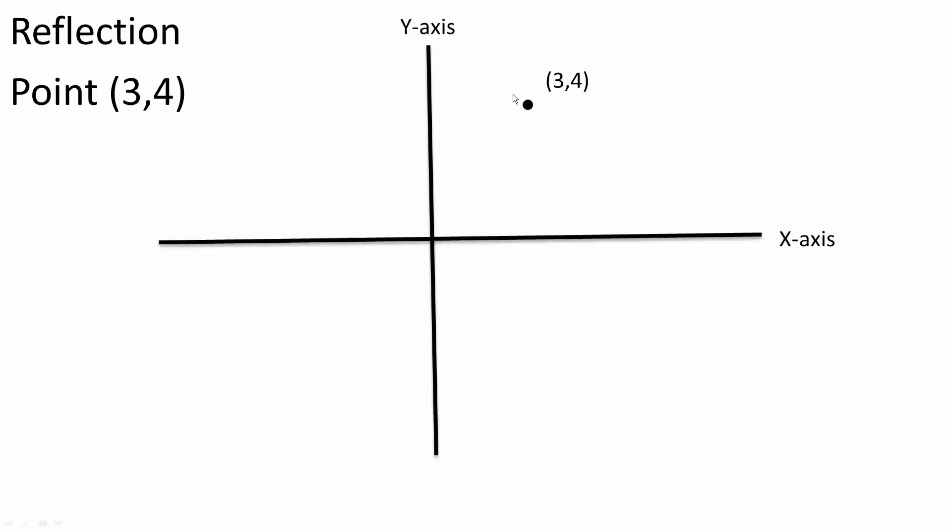So this is our point right here, (3,4), and we want to reflect across the x-axis. This is the x-axis, so what's going to change is our y-piece. (3,4) will now be (3,-4). It's reflecting across the x-axis.